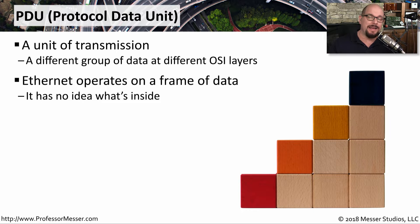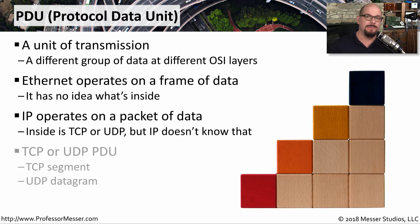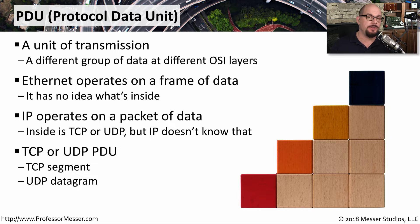But inside of that particular frame is data that the switch doesn't really care about. The same thing applies if a router is forwarding IP traffic — it's concerned about the IP addresses, but it doesn't care about the other data involved with other protocols inside of that packet. And if you're working with TCP or UDP, the protocol data units for those would be a TCP segment or a UDP datagram.